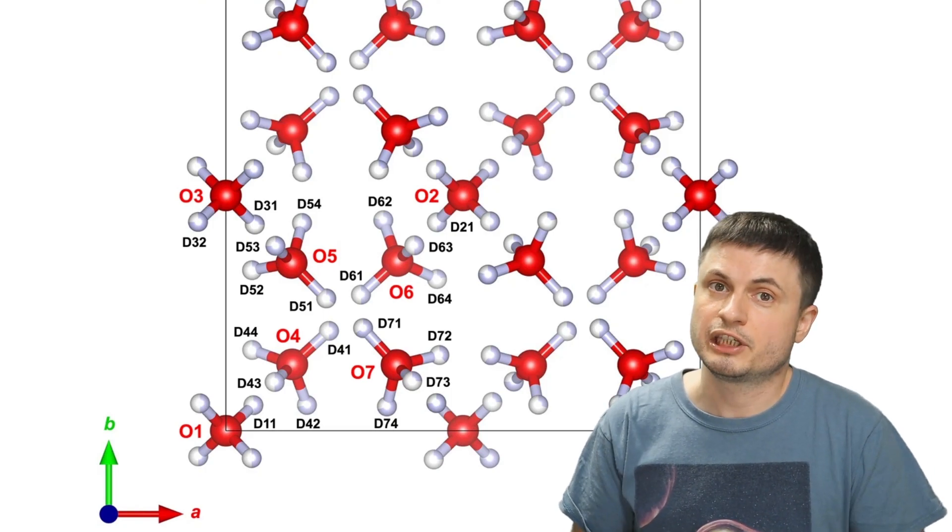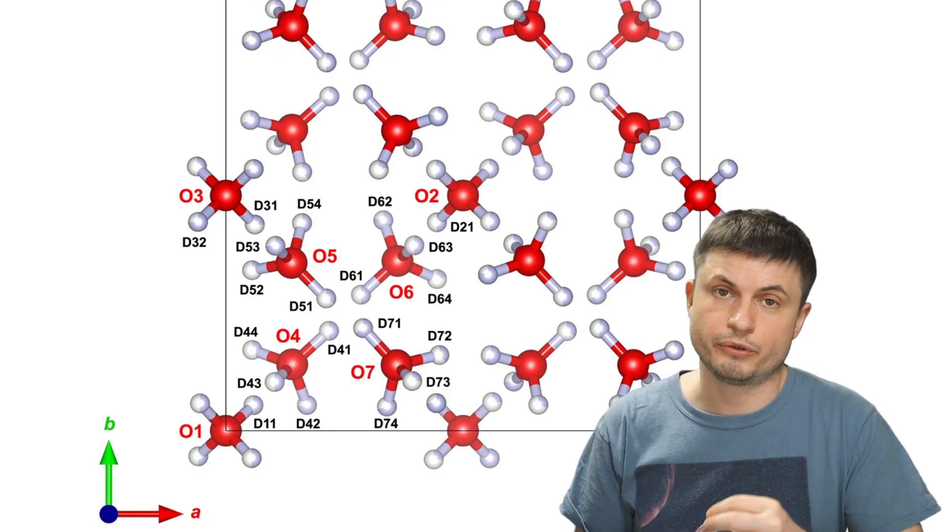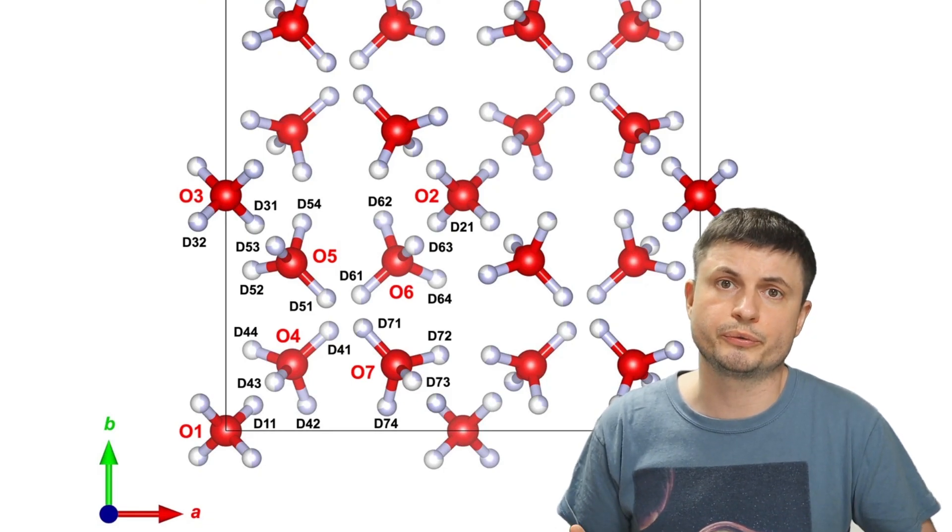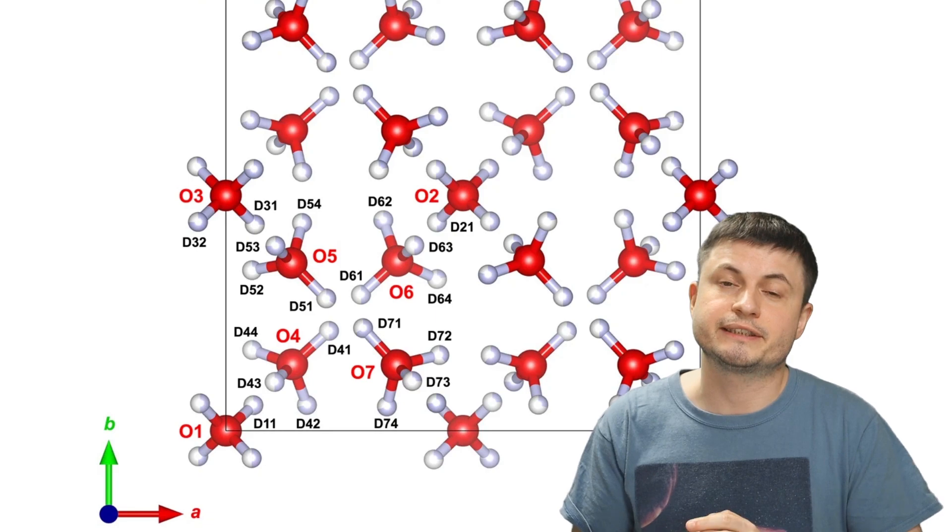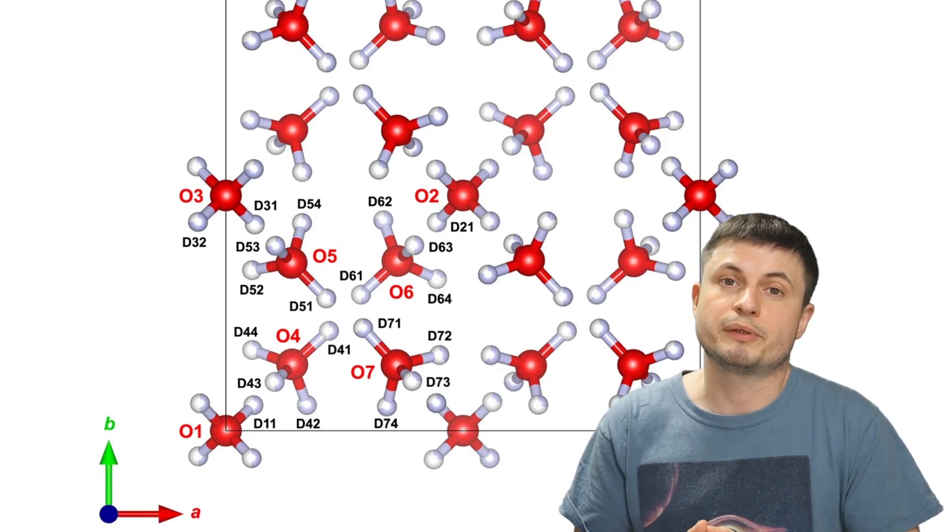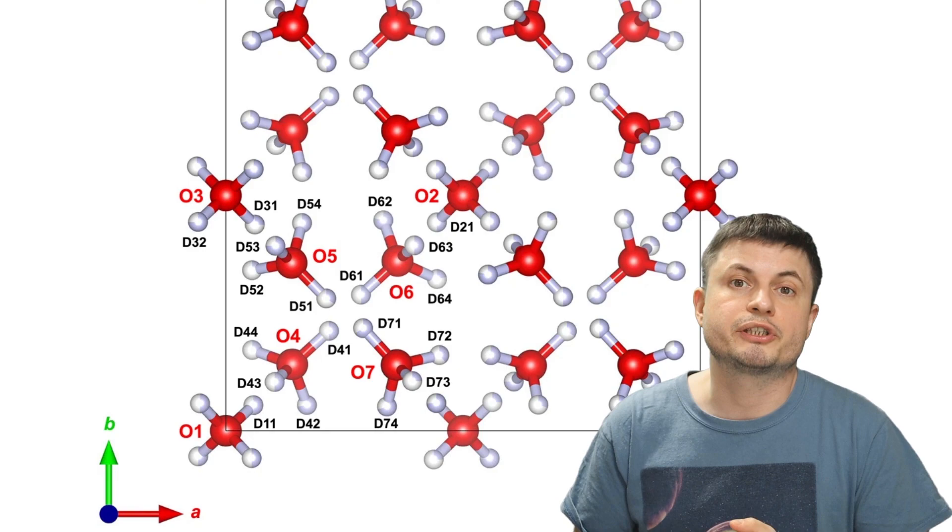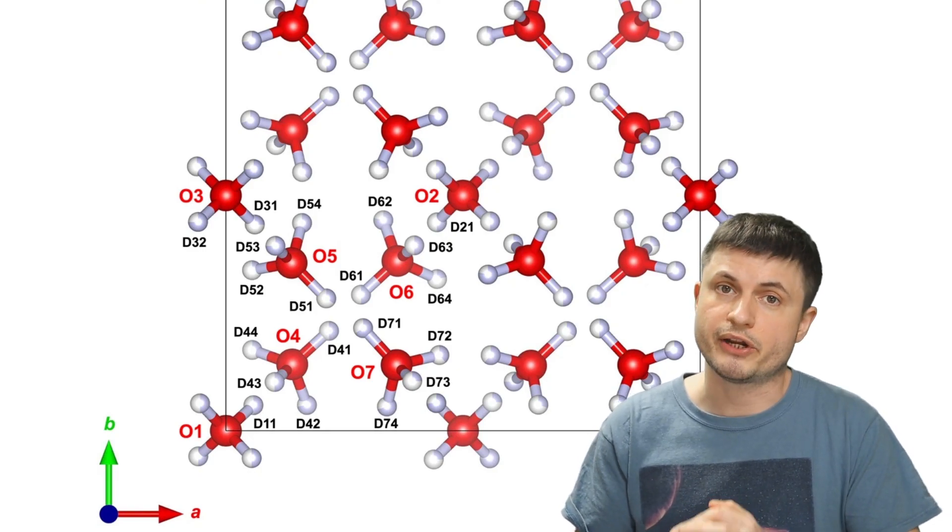Or more scientifically speaking, instead of a hexagonal ice we find on Earth, the normal ice we're used to, this is a tetragonal crystalline phase, that can only form in very special conditions, very cold temperatures, and also very, very high pressures.